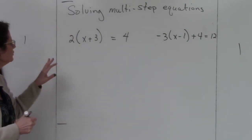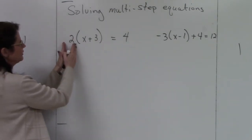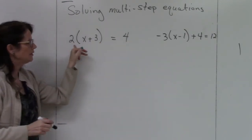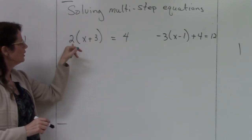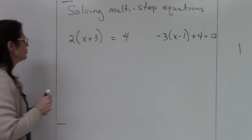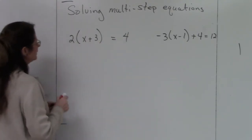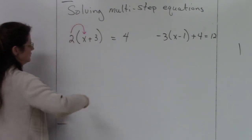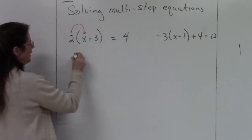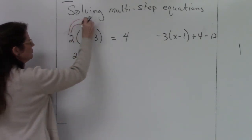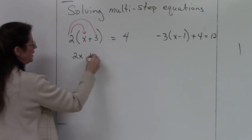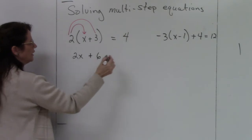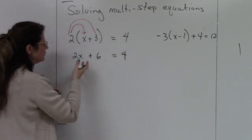Let's try these first two. I have a number on the outside of parentheses and something on the inside, which means I'm multiplying that 2 by everything inside. So I'm multiplying 2 times X to get 2x, then multiplying 2 times positive 3 to get positive 6.